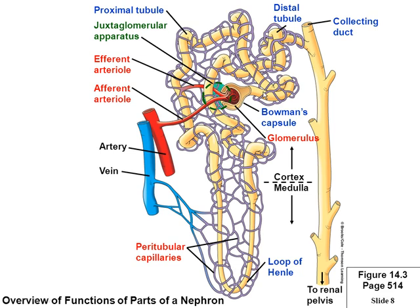The next is the proximal tubule — the closest one to the beginning. This is a one-way flow; it always starts at Bowman's capsule and moves forward. The proximal tubule winds back and forth, then starts going down in the descending loop. This loop is called the loop of Henle. On one side you have the descending tubule, then it loops around and goes up as the ascending loop.